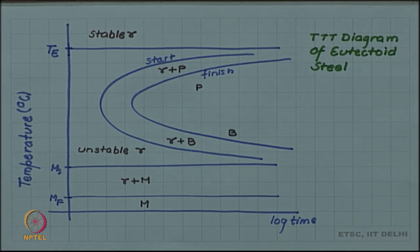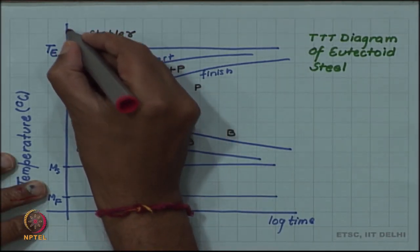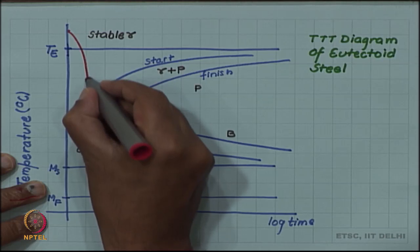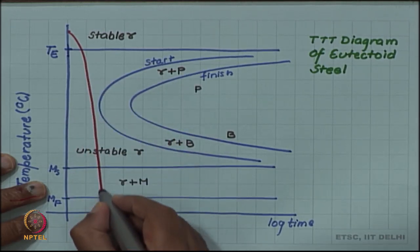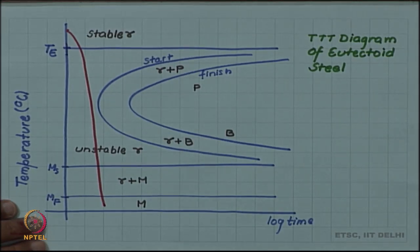We have seen that on quenching we produce martensite and this can be described by a TTT diagram like this. We drew a single cooling curve or a quenching curve like this giving us martensite.